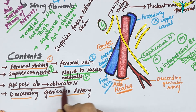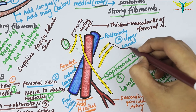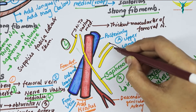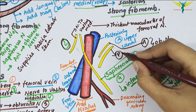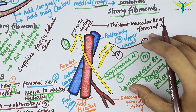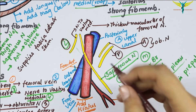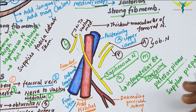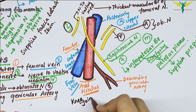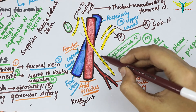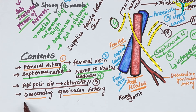The anterior and posterior divisions of the obturator nerve are also contents of the adductor canal. The posterior division of the obturator nerve runs on the anterior surface of the adductor magnus and ends by supplying the knee joint.